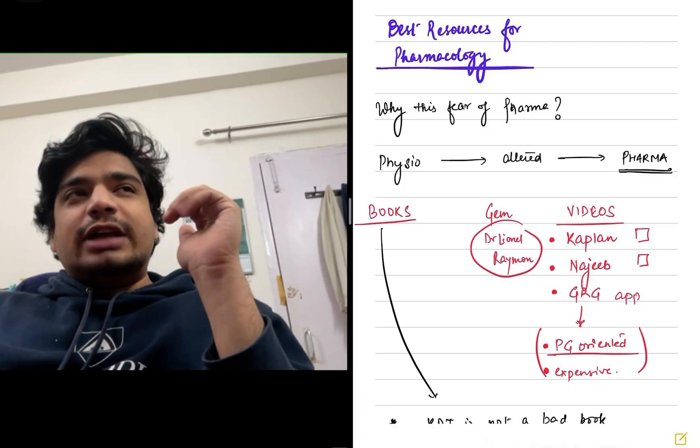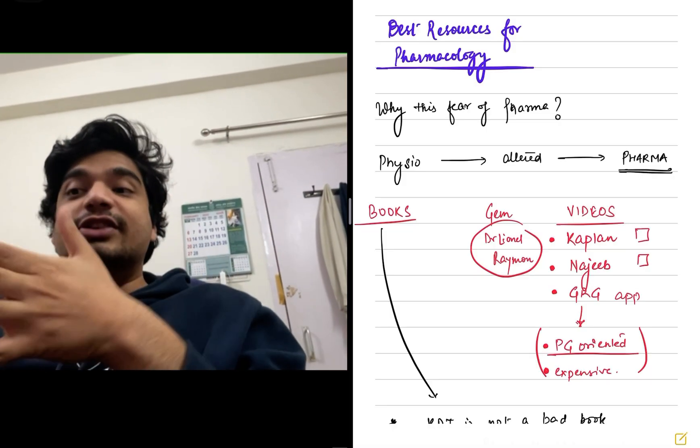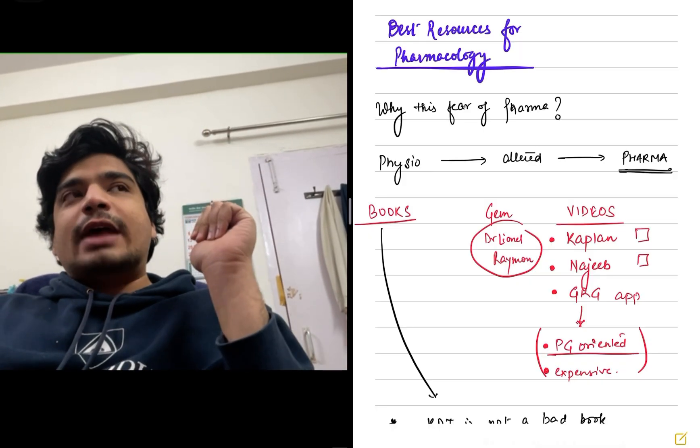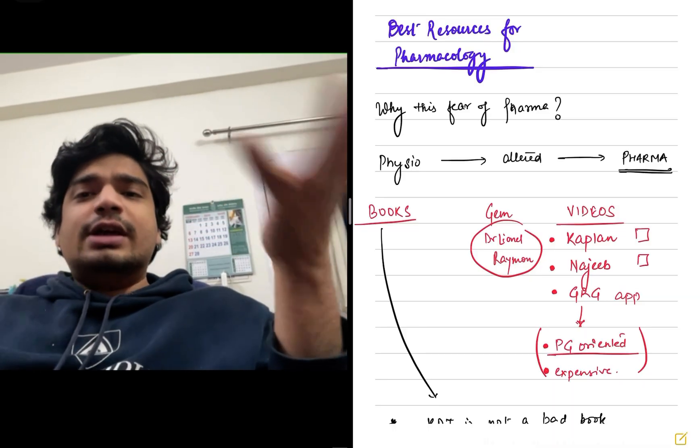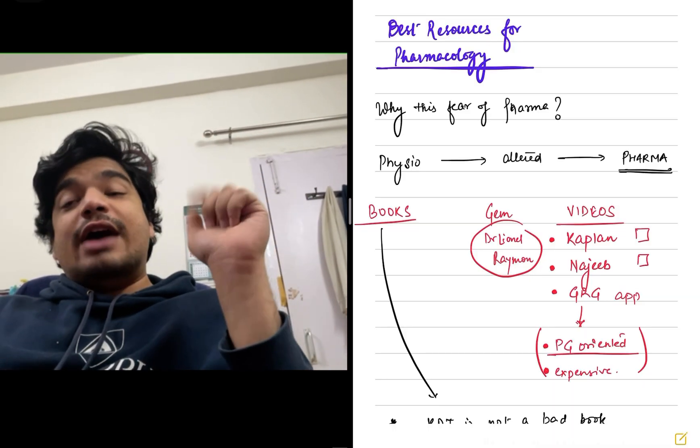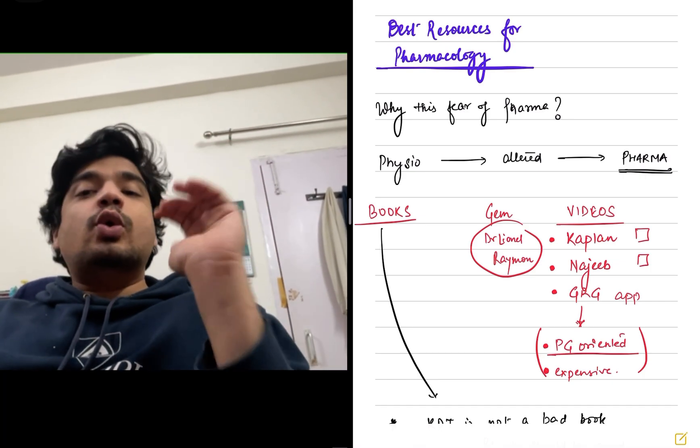Now the reason I'm keeping it at third rather than first, although GRG is best suited for Indian scenario, there are two reasons for that. GRG is heavily PG oriented. And you don't know how the PG pattern might change, especially since the NEXT is going to come. So it doesn't make really much sense to buy the GRG app. Having said that, GRG as a book is really good. I'll be coming up onto that. So I'll say go for Kaplan videos.